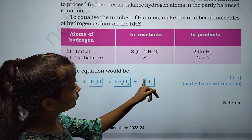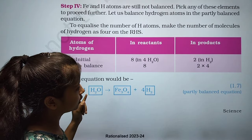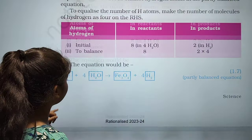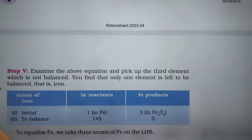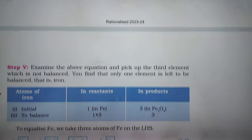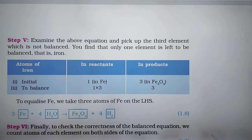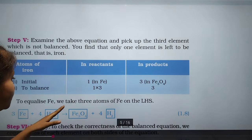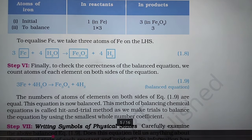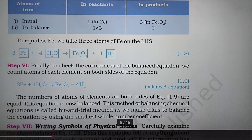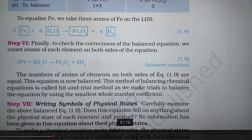We multiply by 4 and write 4 on the hydrogen side. Now examine the equation and pick the third unbalanced element — iron. Initially there is 1 Fe on the reactant side and 3 in Fe₃O₄, so we multiply Fe by 3. Finally, to check the balanced equation, count the atoms of each element on both sides — they are equal, so this is a balanced equation.